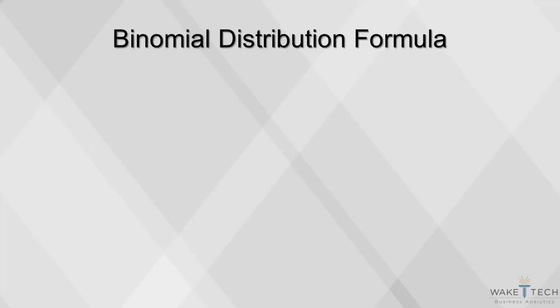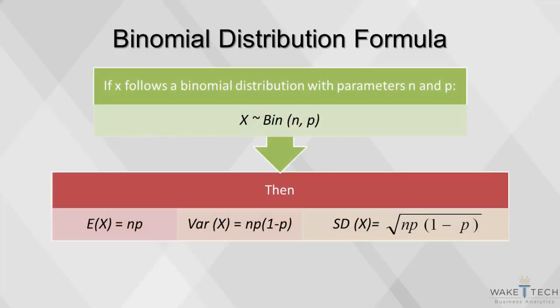All probability distributions are characterized by an expected value and variance. If we toss a coin 100 times, what would be the average number of heads we would get? What about the variance? These are computed using these formulas.